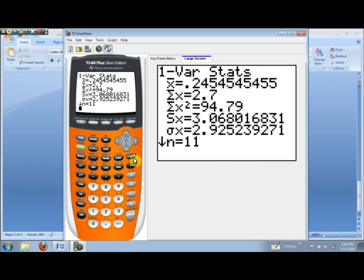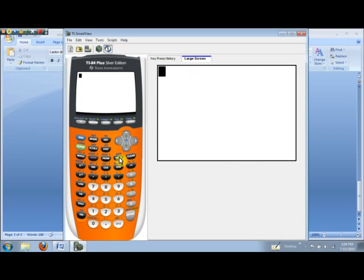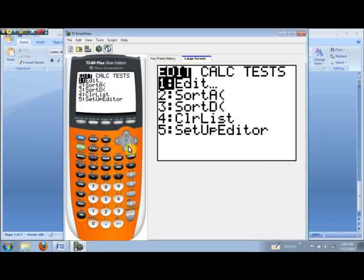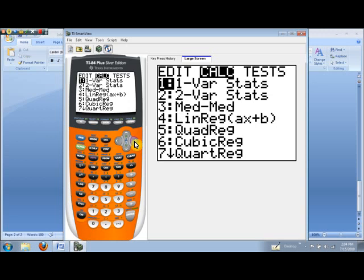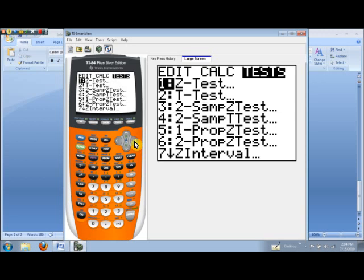If we hit stat, and then go over to tests, we can go to option two for the t-test, because that's what we're working with here with the student's T distribution. But now we have data, so I'll go ahead and highlight data and hit enter.